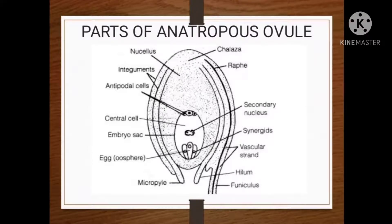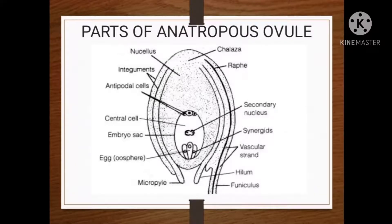The embryo sac is also called the female gametophyte as it contains the female gamete or egg. It is a large, oval-shaped cell present towards the micropylar end of the nucellus. It is embedded in the nucellus and the embryo develops in this cell, hence it is called the embryo sac. In a few ovules, this embryo sac is absent. If you observe the embryo sac in detail, you can see inside it the presence of a seven-cell and eight-nucleated structure.